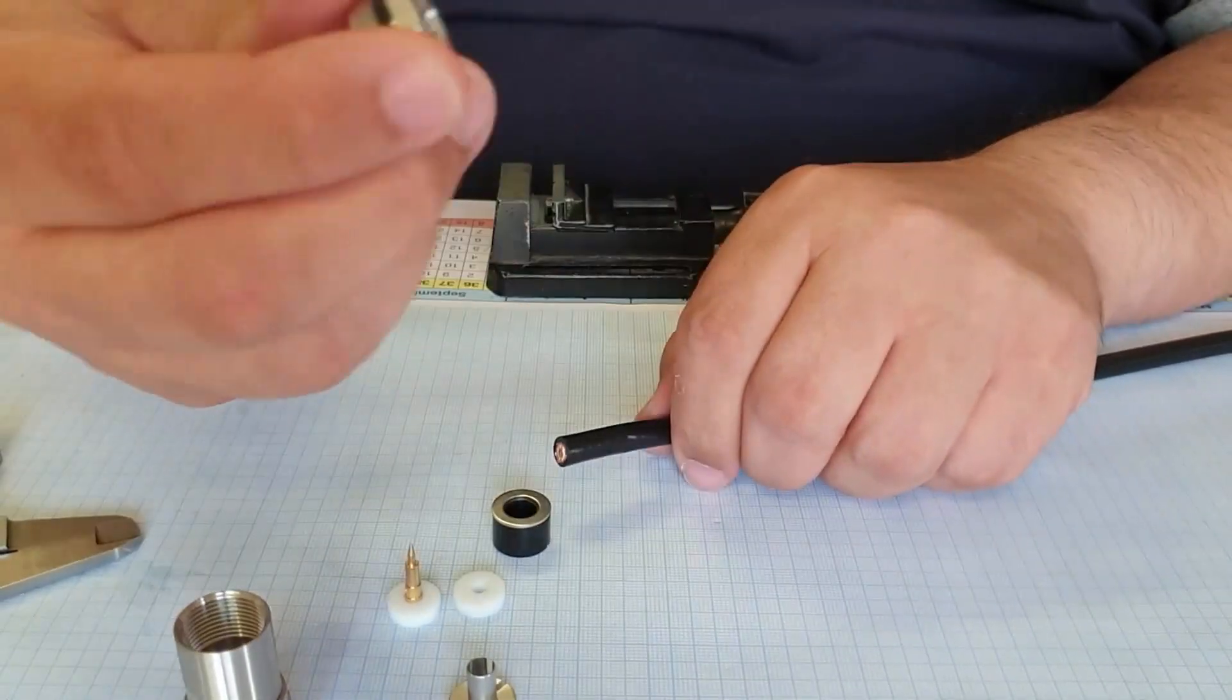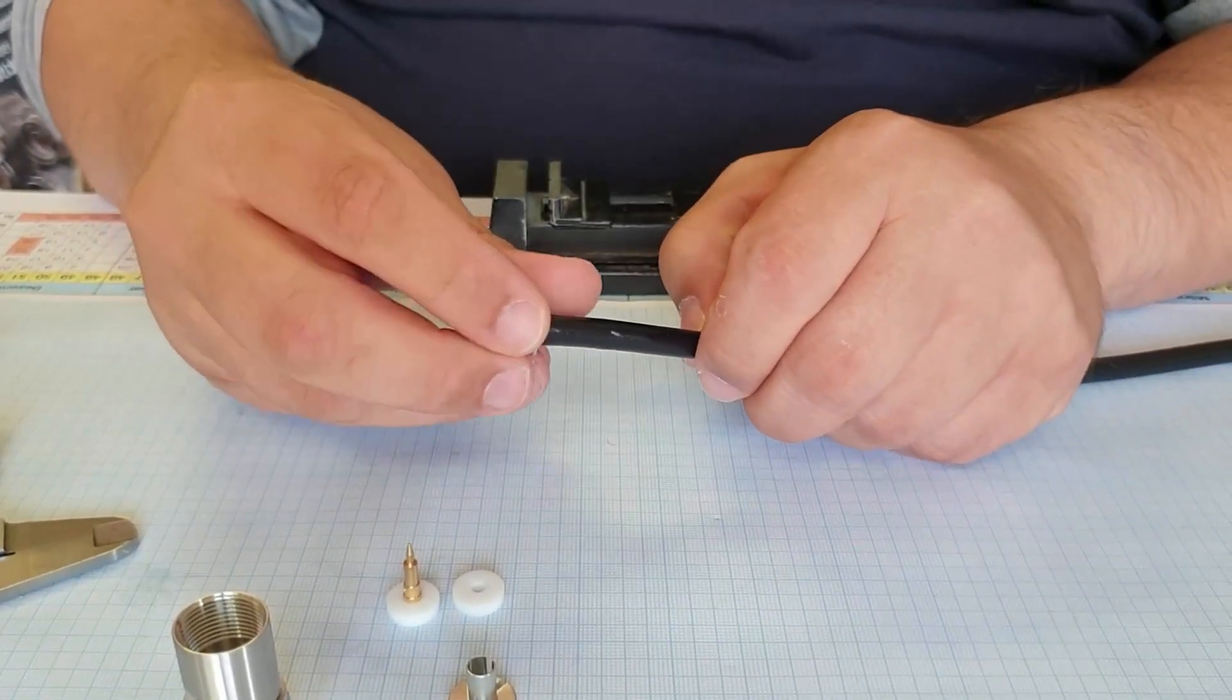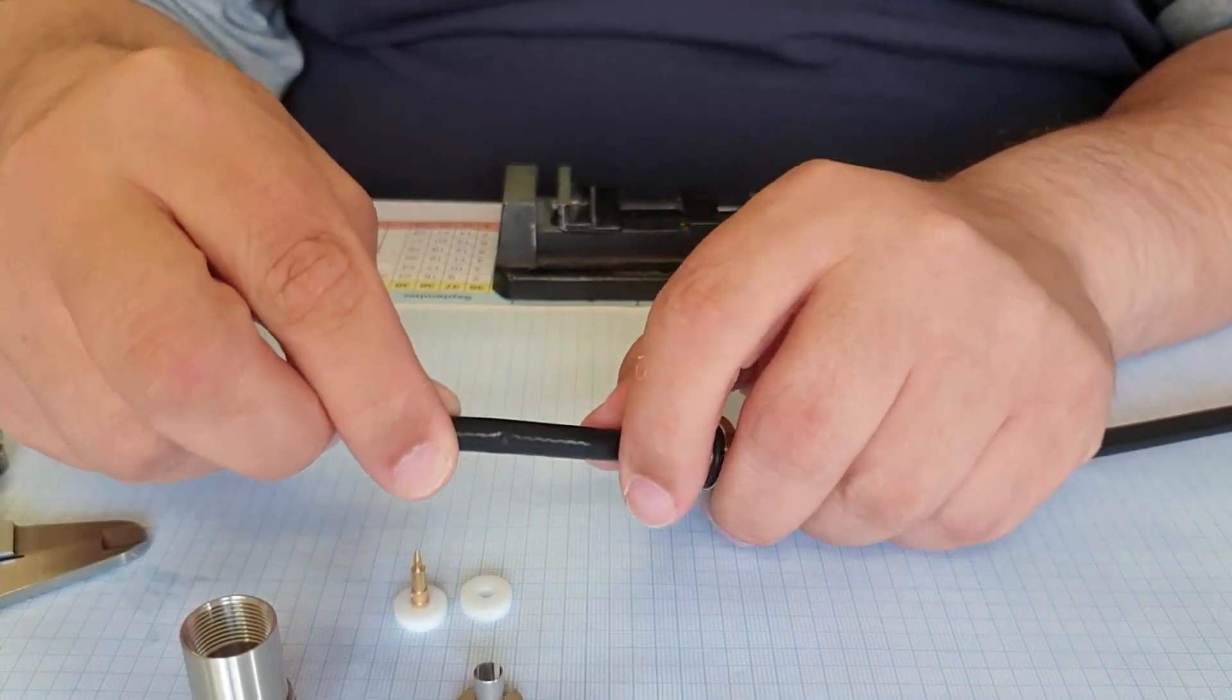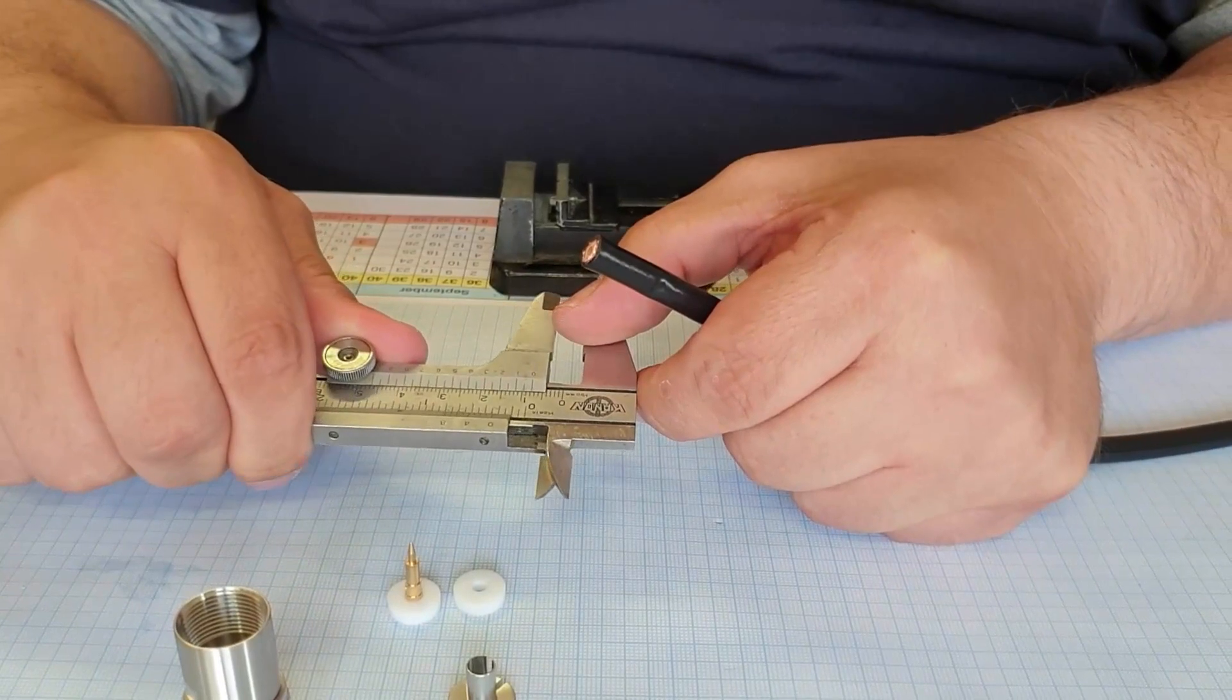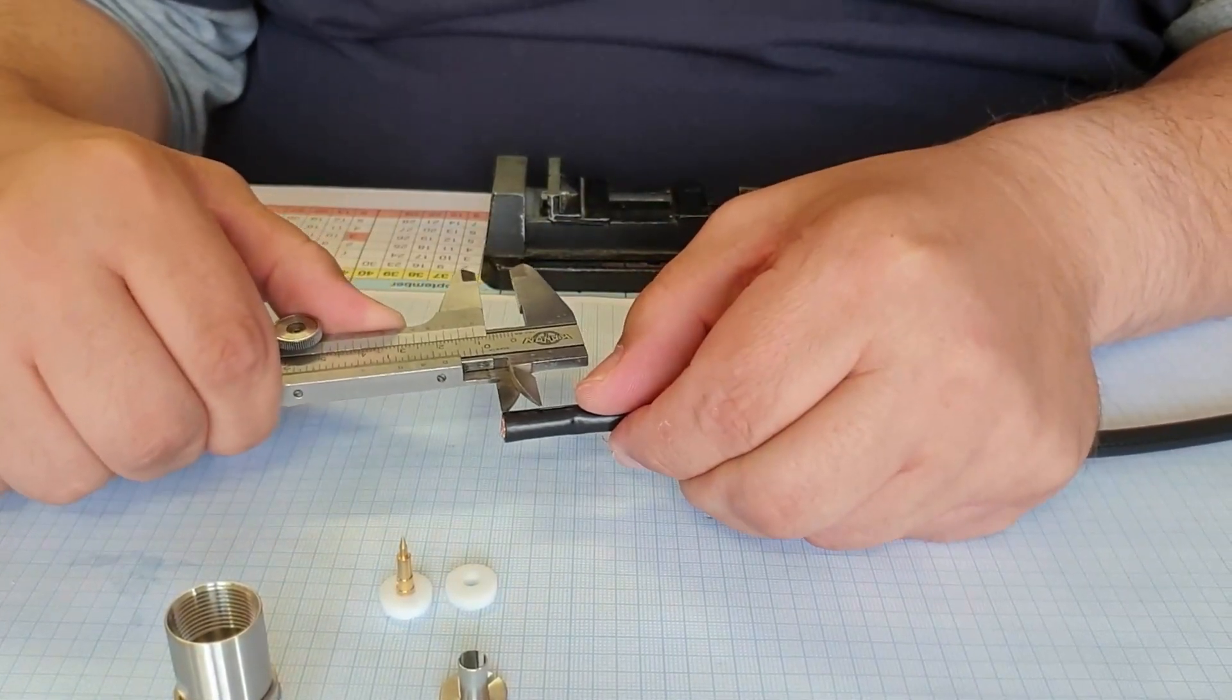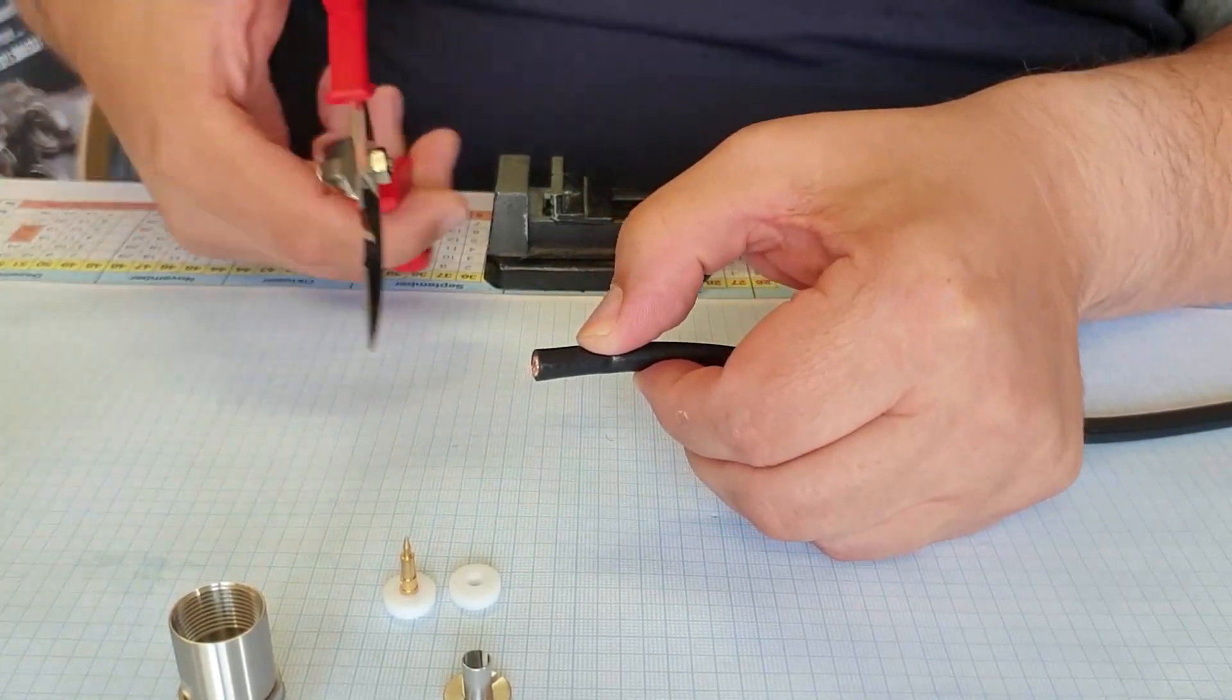First of all, we put this screw over here, the little washer first, and then the rubber sealing. Now we have to measure a little bit, to one centimeter, which we have to un-isolate the shield.